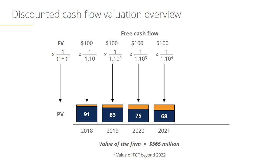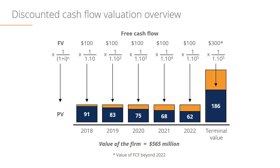By 2021 it's worth $68 today, and by 2022 it's down to $62. Then finally in a DCF analysis we have a terminal value. The first five years were our detailed forecast of what we expect cash flow to be, and then we value the business into perpetuity using a terminal value. In this case we're saying the terminal value of the business is $300 in future cash flow.